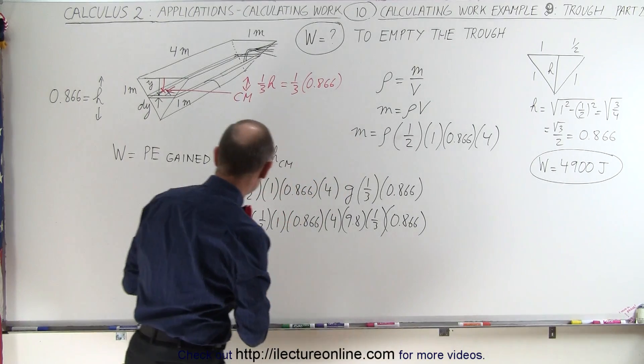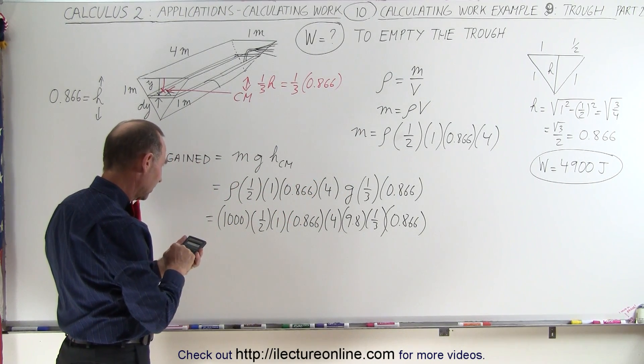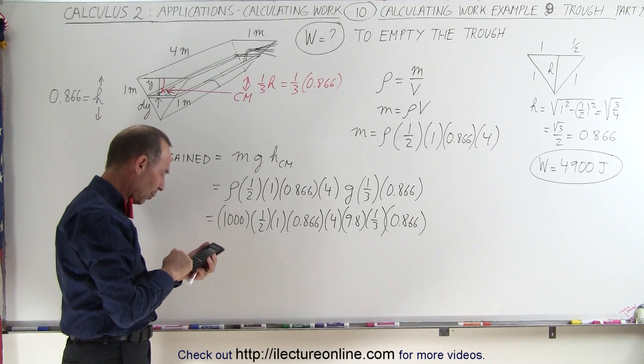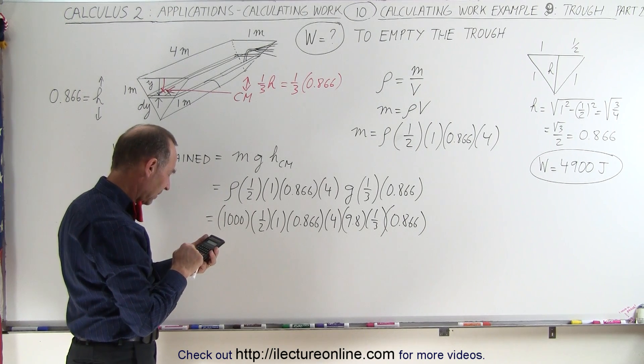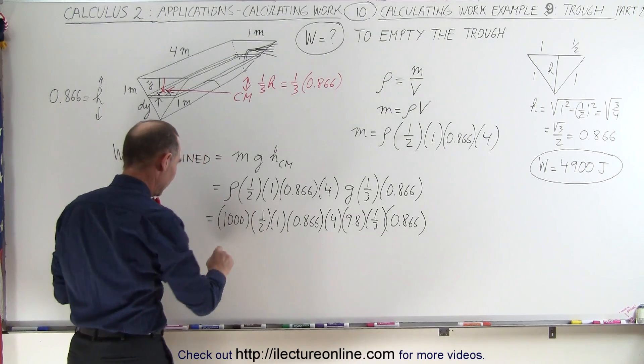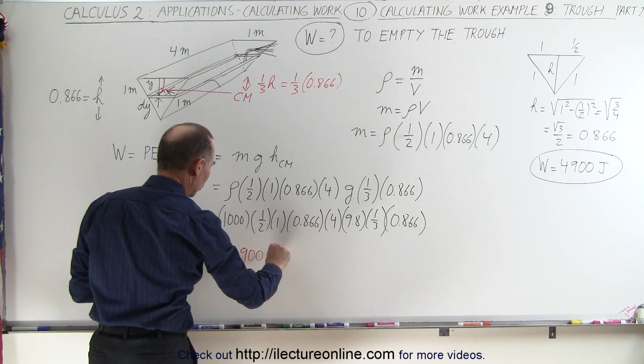So 1,000 times one-half times 0.866 squared, that would be times 0.75, times 4, times 9.8, and divided by 3 equals, and sure enough, we get the exact same 4,900 joules.